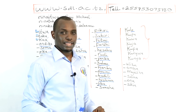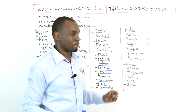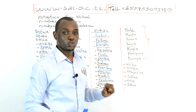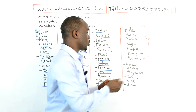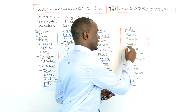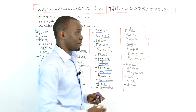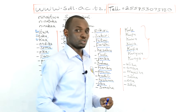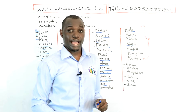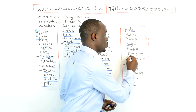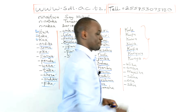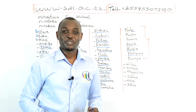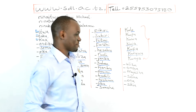Ku Pa means to give. Ku A means to be. Ku Ja means to come. Ku Fa means to die. Ku Nyuwa means to drink.